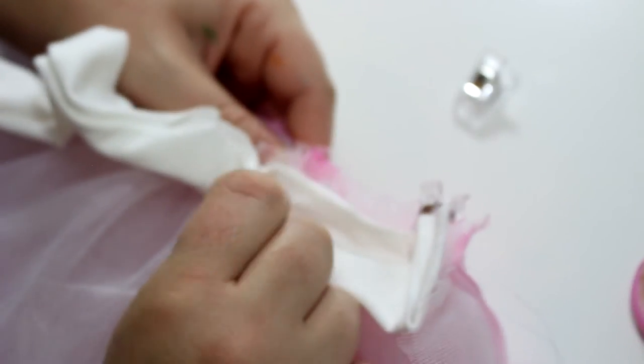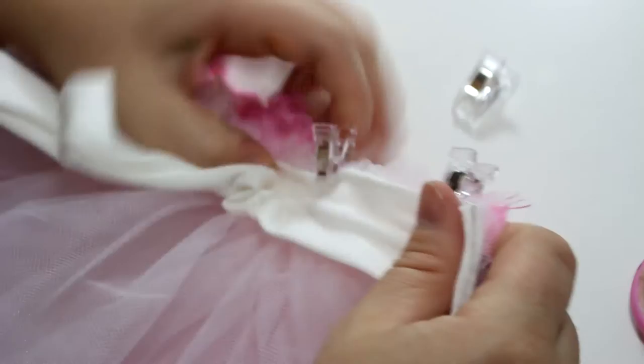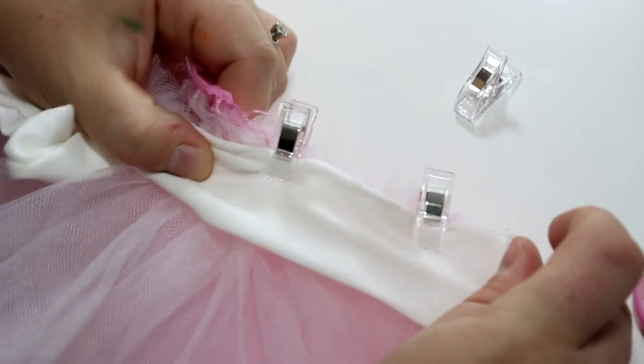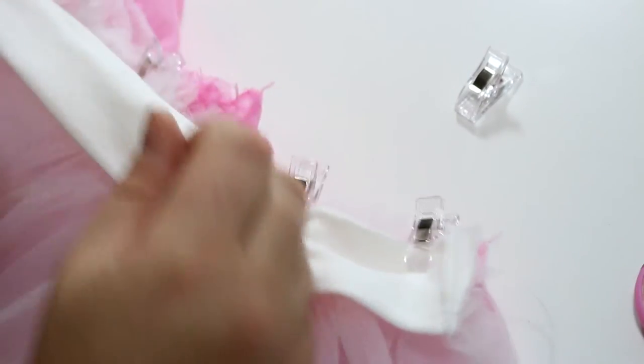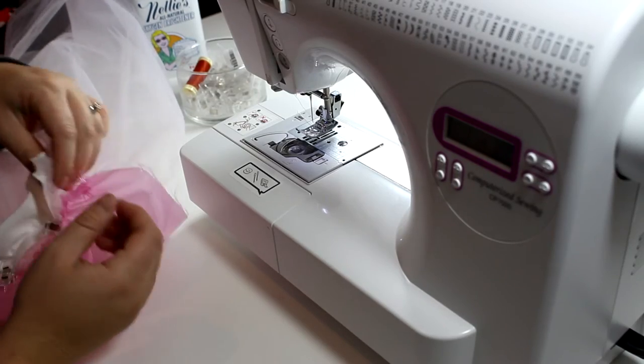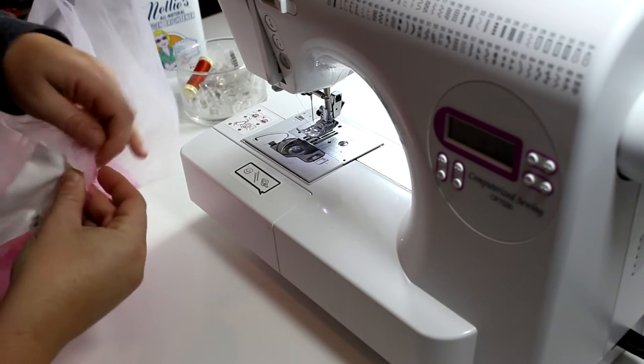We're going to do it this way just because once it's been sewn then the waistband is going to flip up and then you won't see that seam, and then you will put your ribbon through the waistband to complete that part.